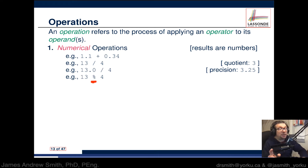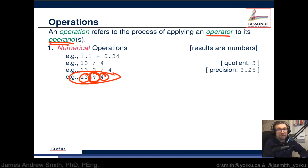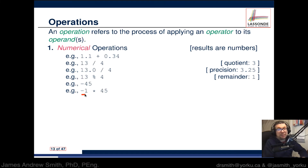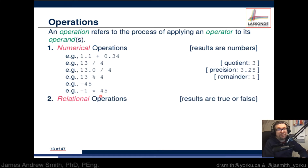You can also use the modulo operator — don't confuse this with the comment symbol in MATLAB; in Java this is an actual operator. So 13 modulo 2: modulo is the operator, 13 and 2 are operands, and this is an operation that will give a number as a result — in this case the remainder. Negative 45 is basically the same thing as minus 1 multiplied by 45: the minus is the operator, and that's your operands forming an operation.